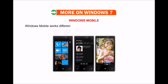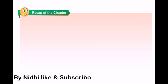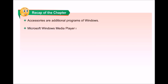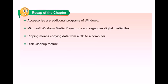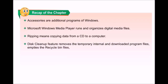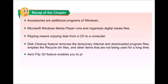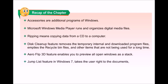Let us quickly recap the key points. Accessories are additional programs of Windows. Windows Media Player runs and organizes digital media files. Ripping means copying data from a CD to a computer. The Disk Cleanup feature removes temporary, internal, and downloaded program files, empties the Recycle Bin, and removes items not used for a long time. The Aero Flip 3D feature enables you to preview all open windows as a stack. The Jump List feature in Windows 7 takes the user directly to frequently used documents, pictures, songs, or websites.